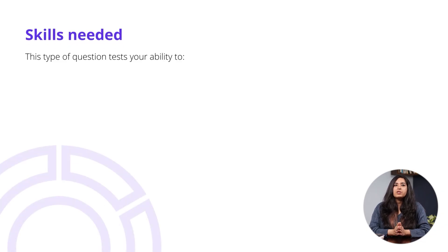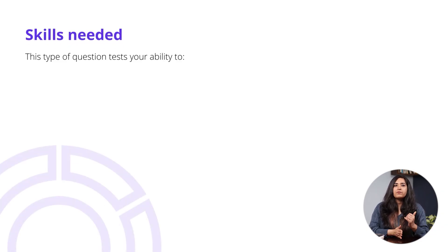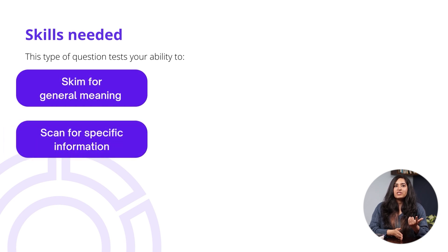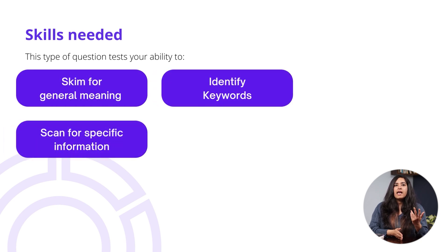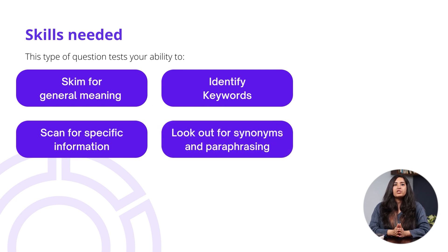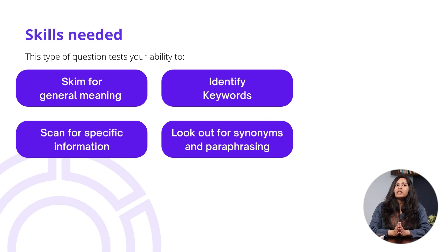This question type tests your ability to skim for general meaning, scan for specific information, identify keywords, and your ability to look out for synonyms and paraphrasing. Do a brush up on your paraphrasing and speed reading techniques, and if you need to refresh your memory, you can have a look at the previous lessons on reading strategies, skimming and scanning, and identifying paraphrasing.